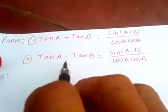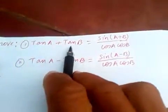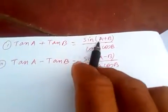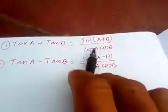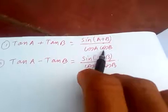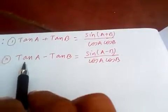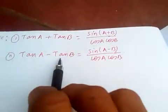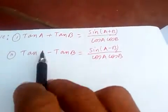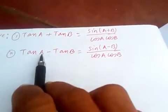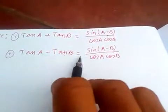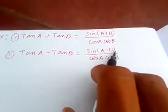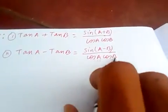Hi friends, let's prove today: number one, tan(a) + tan(b) = sin(a+b) / (cos(a)·cos(b)), and number two, tan(a) - tan(b) = sin(a-b) / (cos(a)·cos(b)).